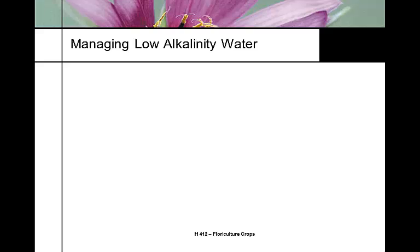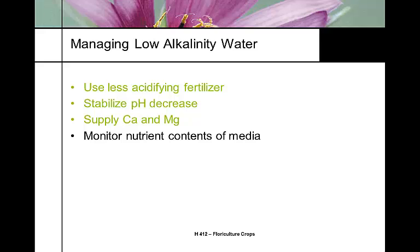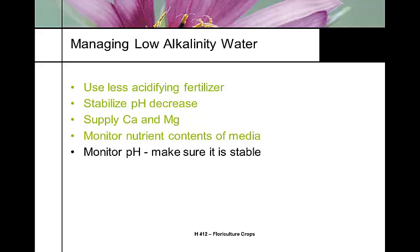Low alkaline water is ideal — this is what we have in Fort Collins, and most surface runoff on the eastern front of the Rockies is very low alkaline water. If you have low alkaline water, you won't need to use acidifiers. However, pH stabilization is more challenging because there's no buffering in the water. You'll also need to supply calcium and magnesium, since low alkalinity means those cations are lacking. Monitor your nutrients constantly, as low alkaline water tends to leach nutrients fairly quickly due to its low buffering capacity. Monitor your pH of your water constantly.